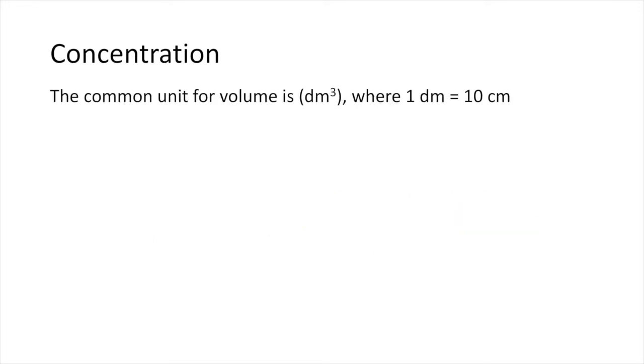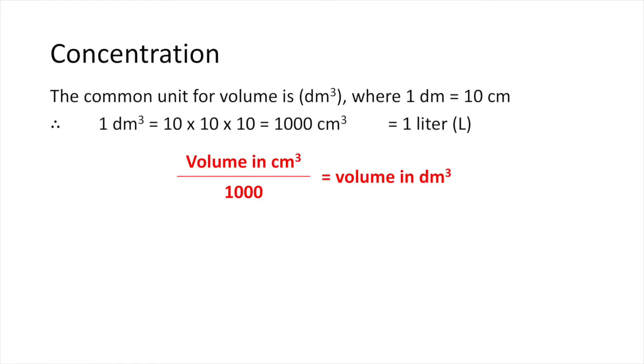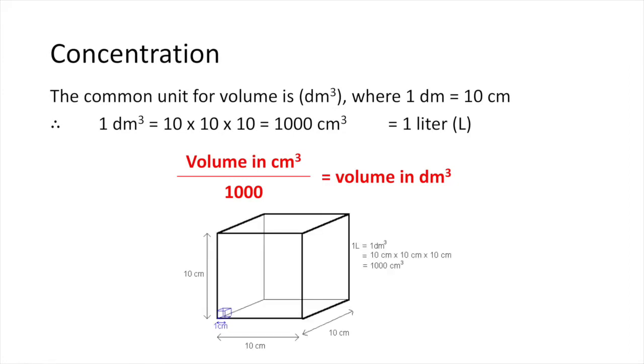For the unit of volume, we try to use dm cubed instead of cm cubed. The relationship between dm and cm is 1 dm equals to 10 cm. So, 1 dm cubed equals 1,000 cm cubed. Or we can say 1 dm cubed equals to 1 liter. Divide the value of cm cubed by 1,000, and you will get the volume in dm cubed, like this diagram shows.